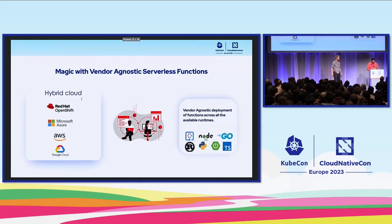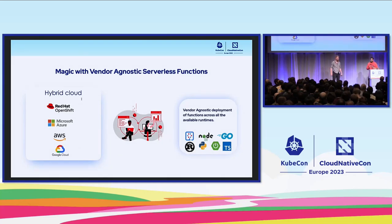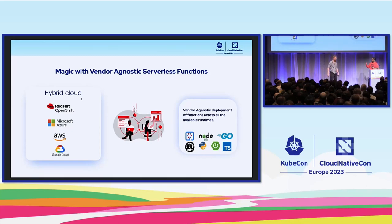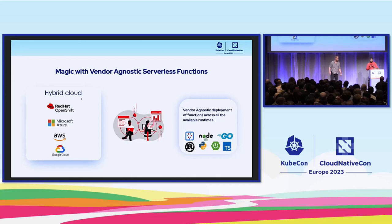Let's see how vendor agnostic works. Right now, when you deploy a serverless function, it should not be dedicated to a specific cloud provider. It can work on any Kubernetes platform — raw Kubernetes, Red Hat OpenShift, Microsoft Azure, AWS, or GCP. The major advantage is that any runtime you select to deploy your functions will work out of the box on any cloud provider.